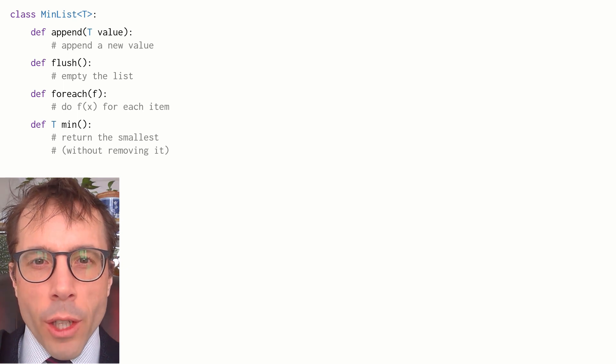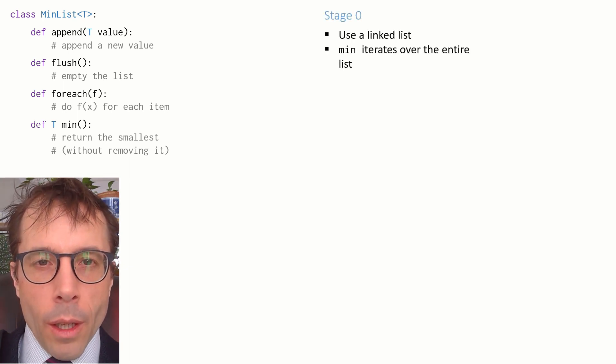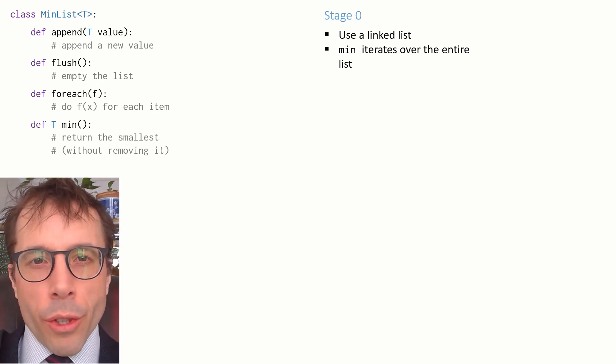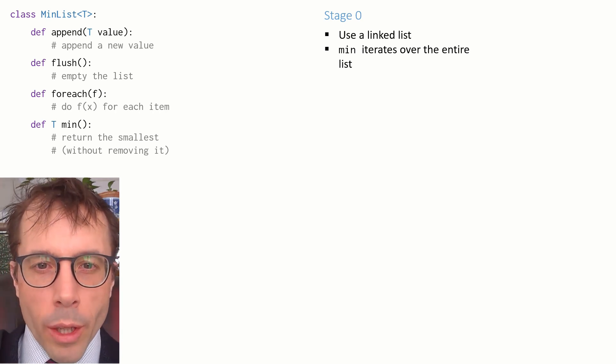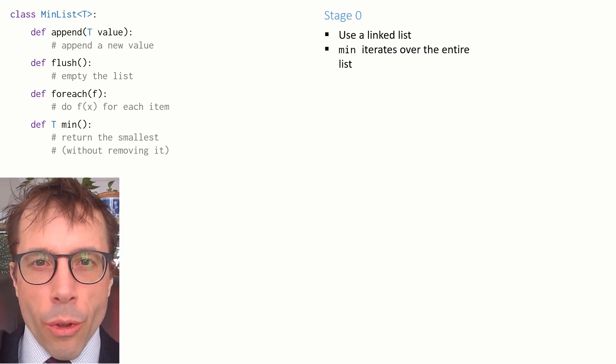I want to describe four stages of enlightenment about the implementation. Stage zero: We'll just store all the values in a linked list, the simplest thing we can think of. Whenever we want to find the minimum item we'll just trawl through the whole list.